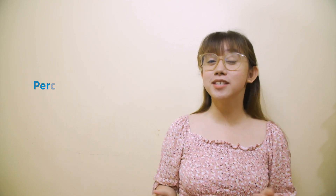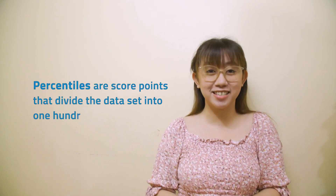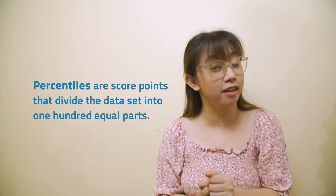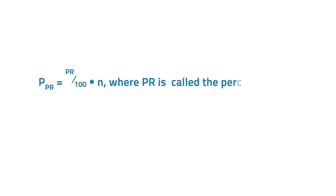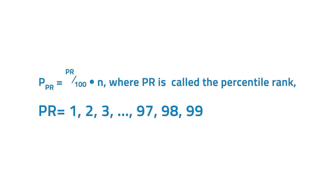And let's not forget about percentiles. Percentiles are score points which divide the data set into 100 equal parts. There are 99 percentiles: P1, P2, P3, and so on until P99. Similarly, like the quartiles and deciles, for instance, P47 means 47% of the scores are less than or equal to P47 and 53% is above it, and so on.